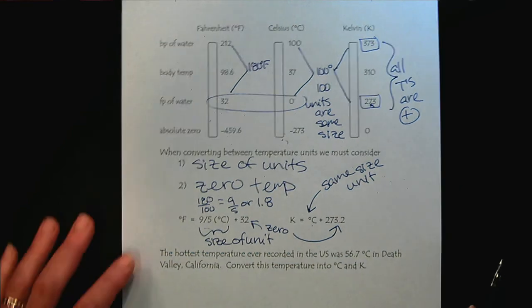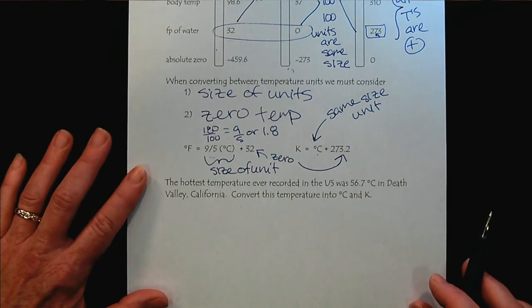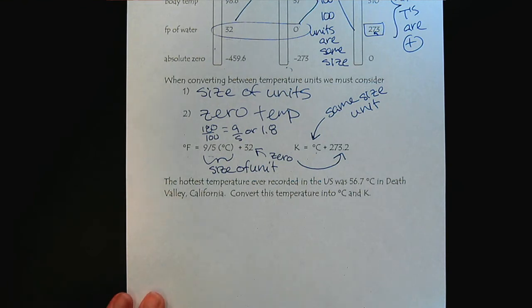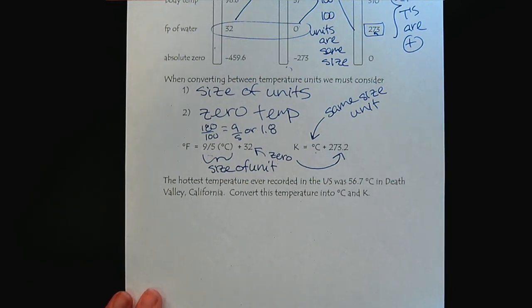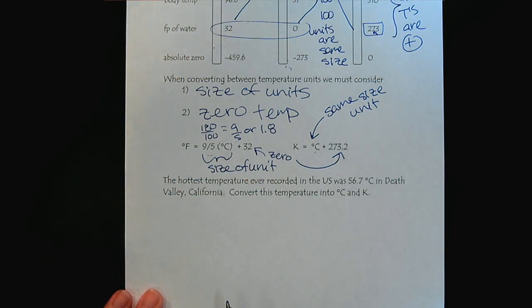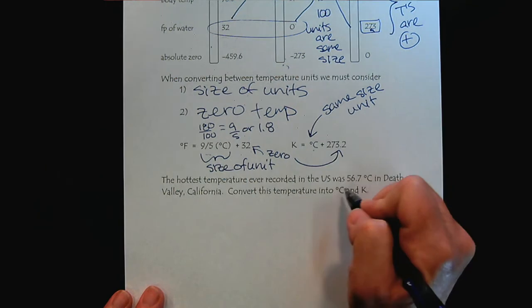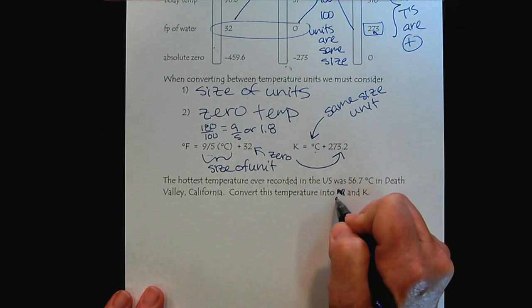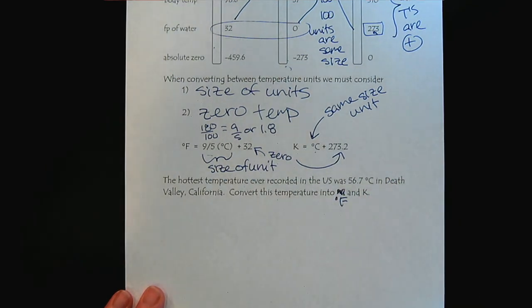Let's do one set of calculations to practice using the formulas that we've discussed. Now we understand where these formulas come from. The hottest temperature ever recorded in the United States was 56.7°C in Death Valley, California. Let's convert this temperature into—oh whoops, we already have it in degrees C. So let's convert to degrees Fahrenheit and Kelvin.